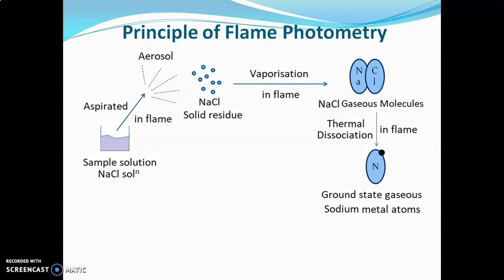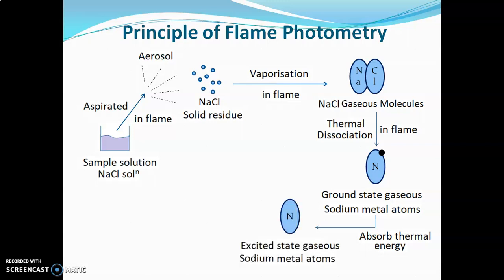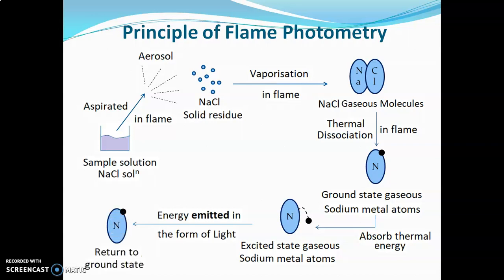The NaCl dissociates and ground-state sodium metal atoms are produced. These ground-state gaseous sodium atoms absorb thermal energy of the flame and convert into excited gaseous sodium metal atoms. The thermal energy is absorbed by the electron of the metal atom, which goes to the excited state. Since the excited state is unstable, the electron emits this absorbed energy in the form of light and the atom returns to the ground state. This emitted radiation is measured by a detector.